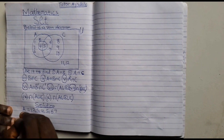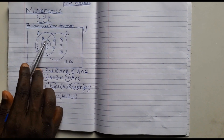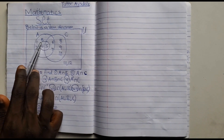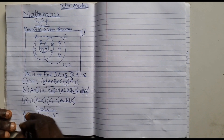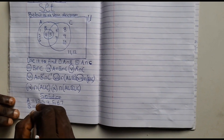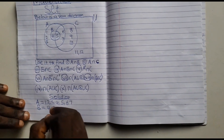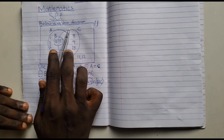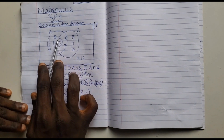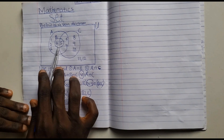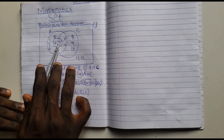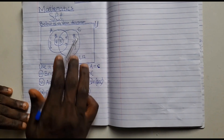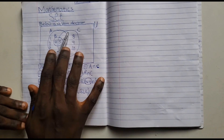For elements B, if you trace this B part, you see that it's only 4 and 5. So the elements that are present in B are 4 and 5. For element C, let's trace element C. You see that 5 is part of element C. So we have 5, 6, 7, 8, 9, 10. They are under elements C.